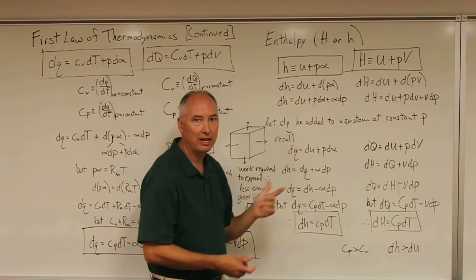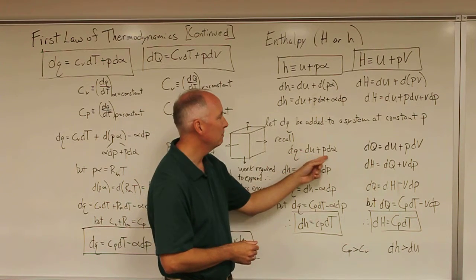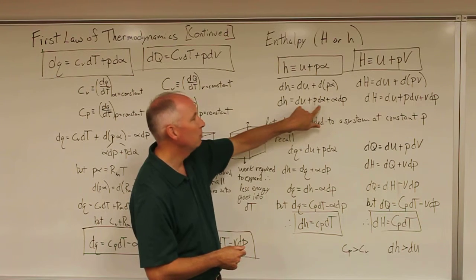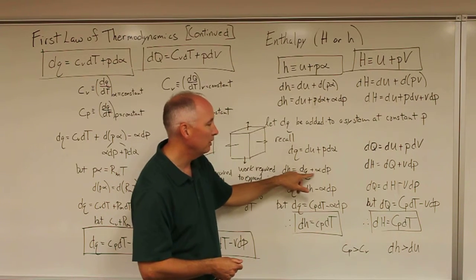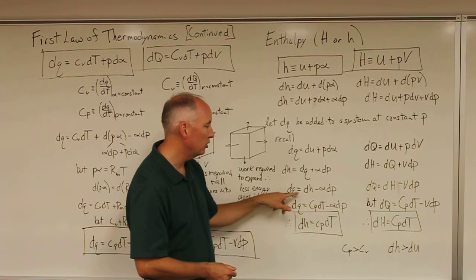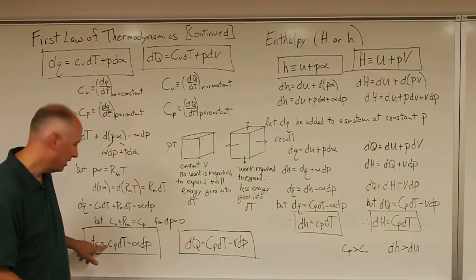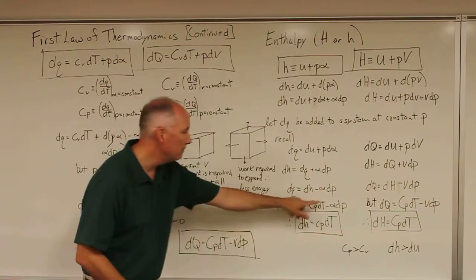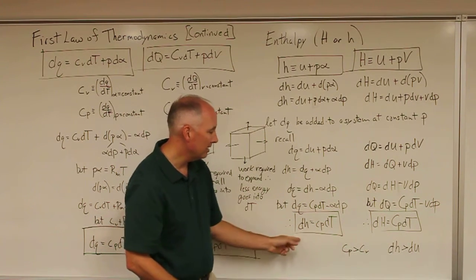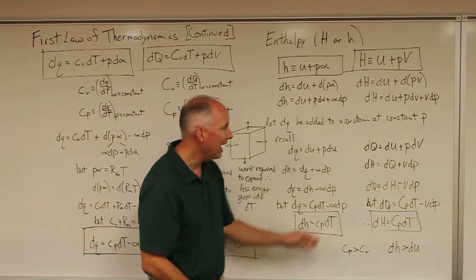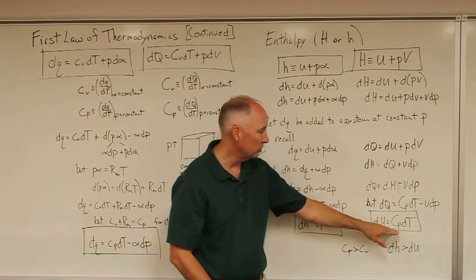Recall that one of our first forms of the first law was dq equals du plus p d_alpha. Substituting this in, dh equals dq plus alpha dp, which rearranges to dq equals dh minus alpha dp. And recall from the earlier derivation that dq equals c_p dt minus alpha dp. From these two expressions it's clear that dh must equal c_p dt. That's another way to define enthalpy. Likewise, for the extensive form, the change in enthalpy equals c_p dT.